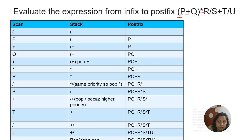Next is multiplication — it goes to the stack. Then R is an alphabet, goes directly to postfix giving P, Q, plus, R. Next is slash (division). Multiplication and division have the same priority — so whatever came first must be popped. Multiplication was already there, so pop it to postfix: P, Q, plus, R, multiplication. Now slash goes to the stack. Then S goes directly to postfix.